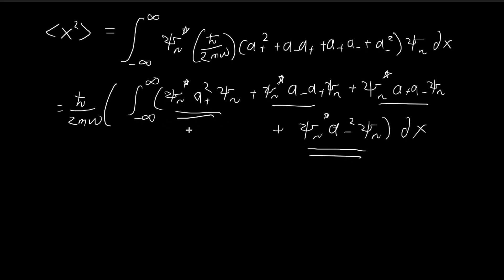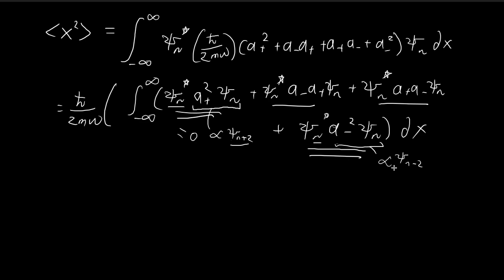The first and fourth terms are equal to zero. Applying a+ twice to ψ_n gives something proportional to ψ_{n+2}, and when you integrate ψ_n* times ψ_{n+2}, since these two functions are orthogonal, the result is zero. Similarly, the fourth term is proportional to ψ_{n-2}, and since those subscripts are not equal, by orthogonality that term is also zero. So we can ignore both of these terms.